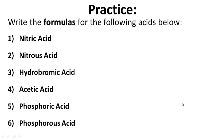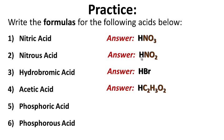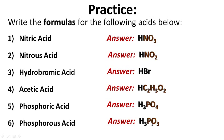Now let's work backwards — write the formulas for the following acids below. Pause this while you practice, hit play when you're ready to see the answers. First: HNO3, nitric acid. Number two: nitrous acid, HNO2. Number three: HBr, hydrobromic acid. Acetic acid or vinegar: HC2H3O2. Phosphoric acid: H3PO4. And phosphorous acid: H3PO3.